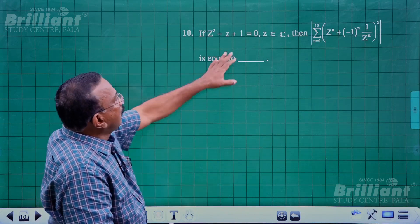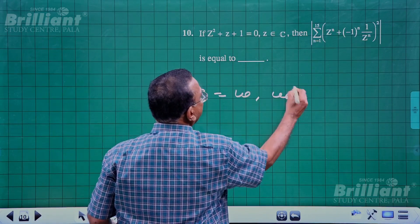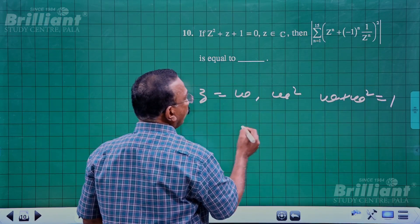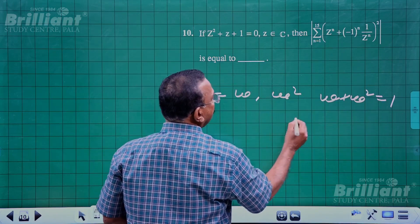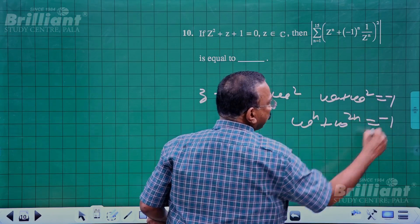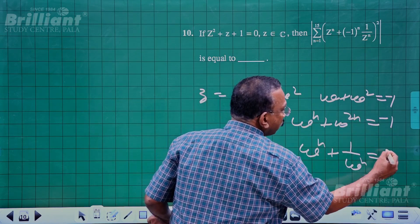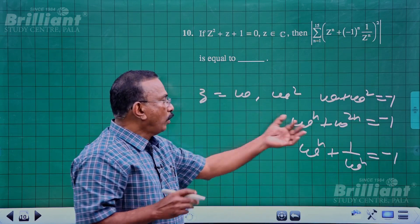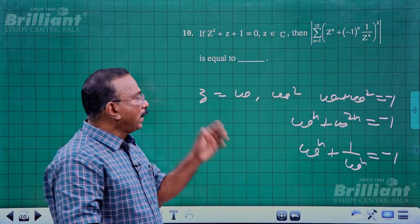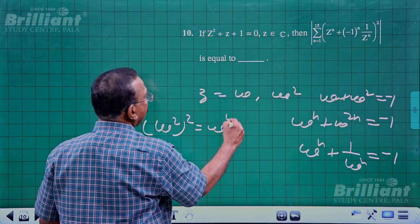Question 10: z² + z + 1 = 0 has roots z = ω and ω². Key properties: ω + ω² = -1; ωⁿ + ω²ⁿ = -1 when n is not a multiple of 3; ωⁿ + 1/ωⁿ = -1 for n not a multiple of 3; and ω² = 1/ω. Also, ω⁴ = ω and ω³ = 1.